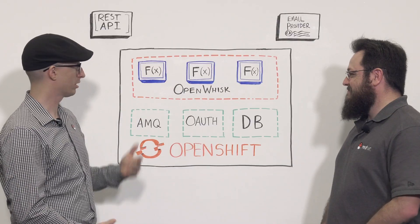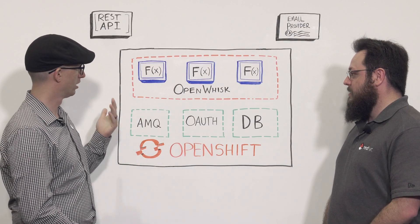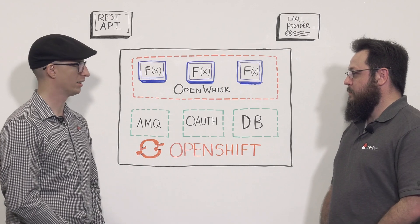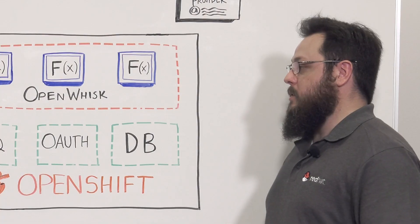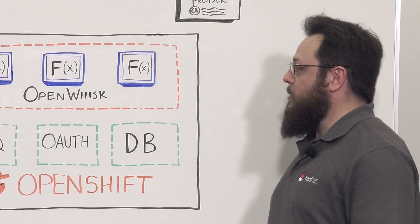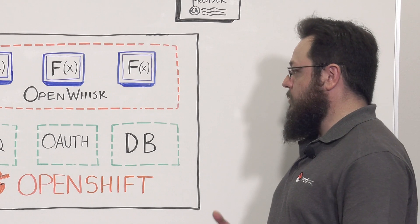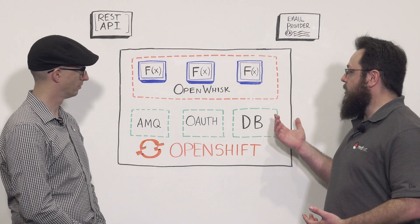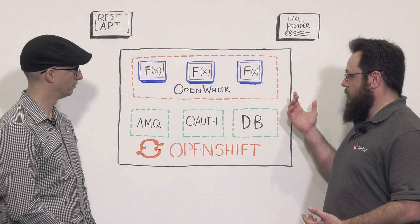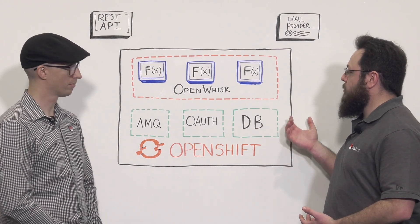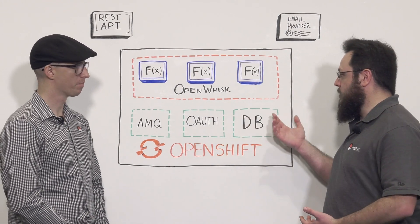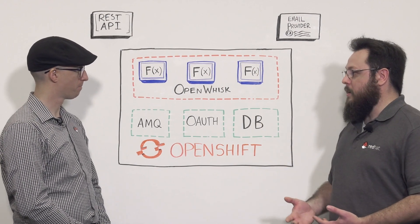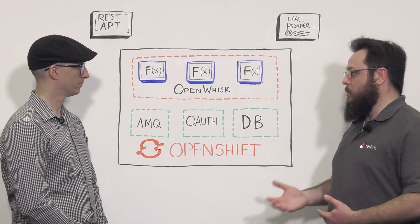Do you want to talk about an easy way to get OpenShift Cloud Functions going on, say, an existing 8-node OpenShift cluster? So, it's just like with any other OpenShift application. You would create a project for OpenWhisk and then use the provided template with the OC create command, which will then create all of the OpenShift primitives that you need for OpenWhisk to run. From there, you just write your functions and deploy them as normal.